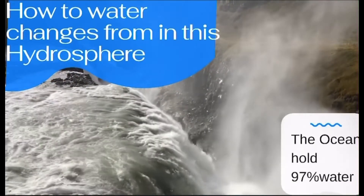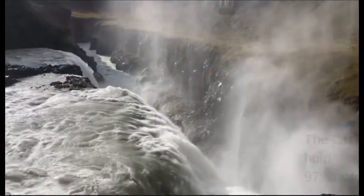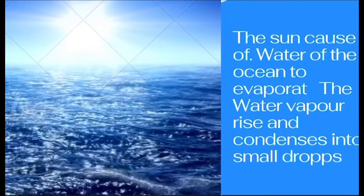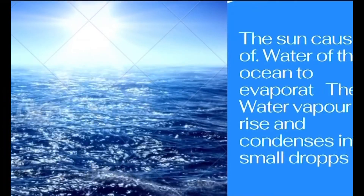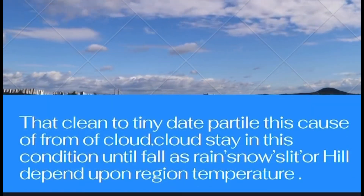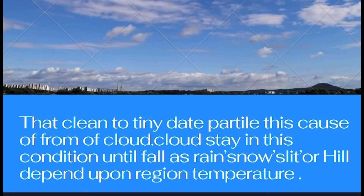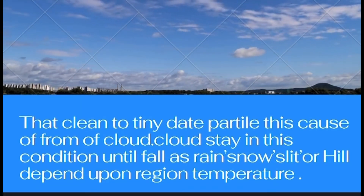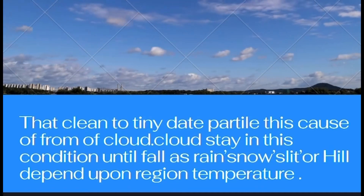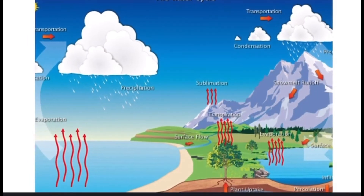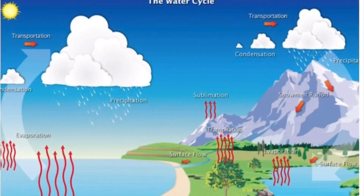The ocean holds 97% of water. The sun causes the water of the ocean to evaporate. Water vapors rise and condense into small drops that cling to tiny particles, forming clouds. Clouds release water as rain, snow, sleet, or hail depending on the region's temperature. Some water falls as snow, some evaporates, and some flows into streams, lakes, or rivers and back into the ocean, completing the water cycle.